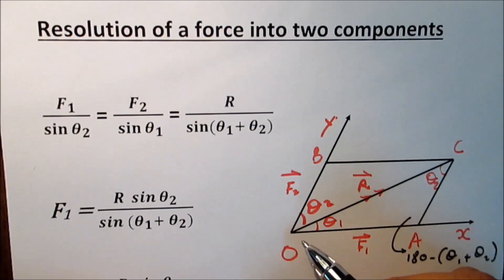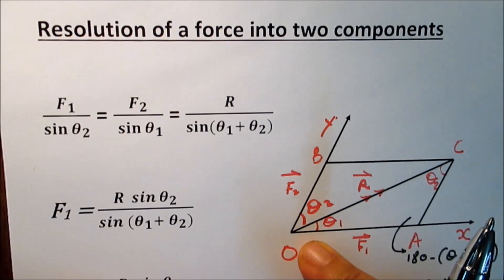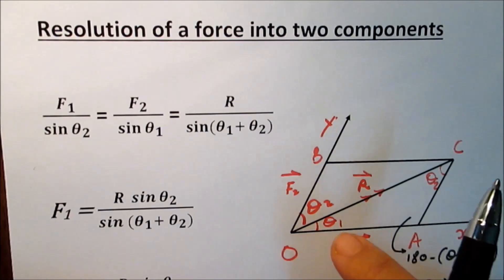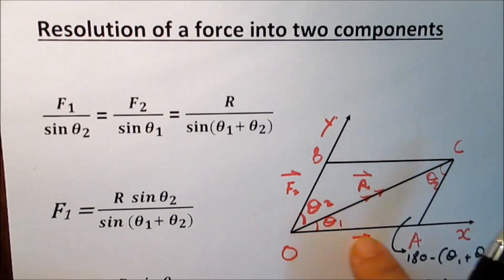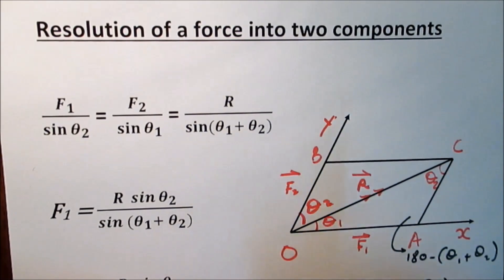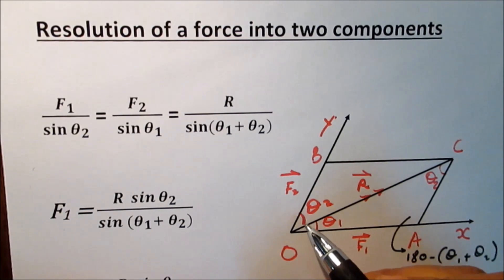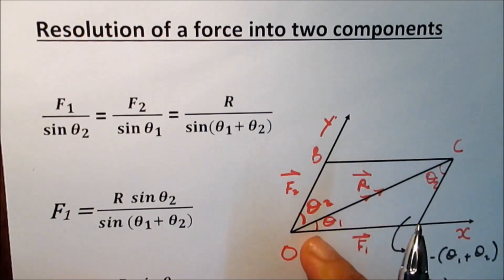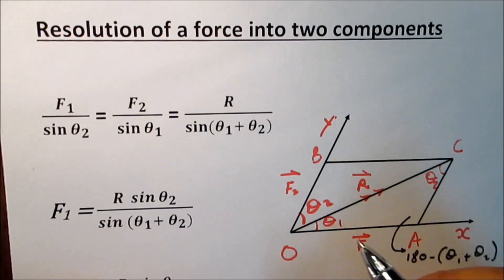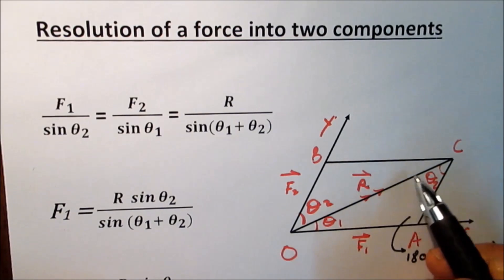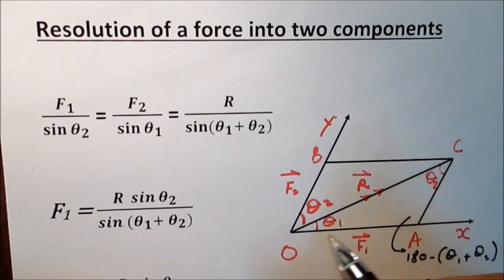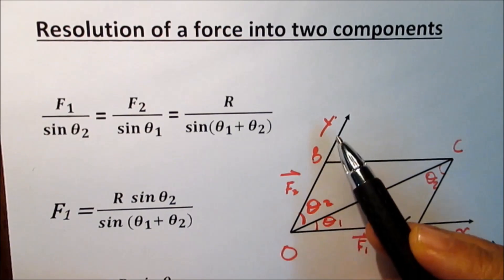Suppose that a force R acts at point A, and we need to resolve it into two components F1 and F2. Let theta1 and theta2 be the measure of the angles of inclination of F1 and F2 to the direction of R. So theta1 is the angle between R and F1, and theta2 is the angle between R and F2.